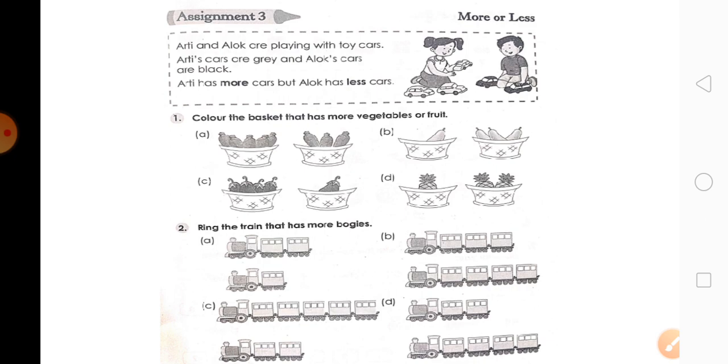Color the basket that has more vegetables and more fruits. तो color the basket. Ring the train that has more buggies. जो train में ज़्यादा buggies है, वो train को आपको ring करना है.